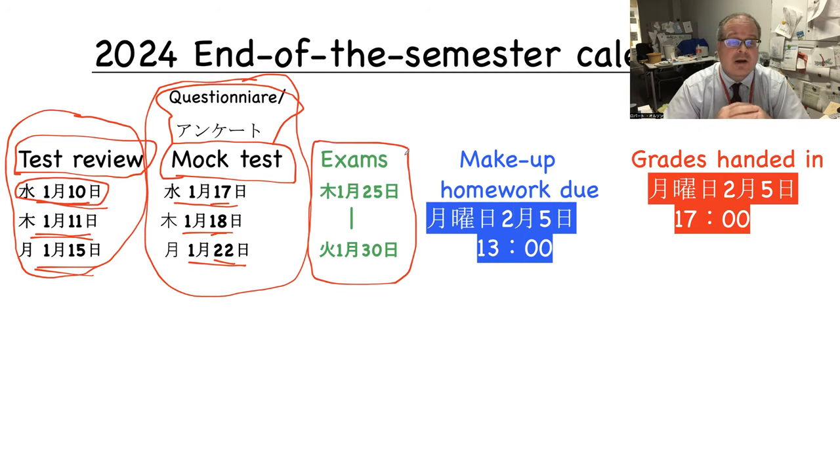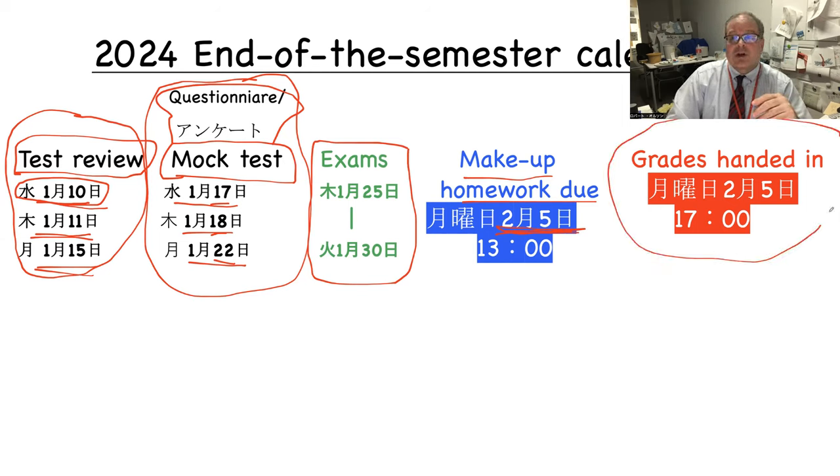Now make-up homework, furikai no shikudai, I'm going to change this and put it on February 5, ni gatsu itzuka ichiji made. So ni gatsu itzuka ichiji made, furikai no shikudai, watashi ni Line kara dashite kudasai. So no maima daijoube desu demo hoko made naze nara. Ni gatsu itzuka goji, watashi wa kyomu ni saigo no seiseki ageru. And so no ato watashi wa nari mo koate masan.